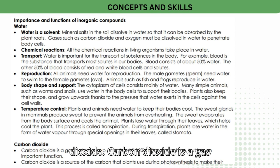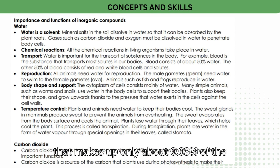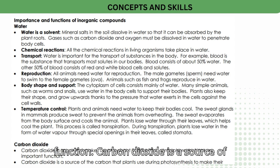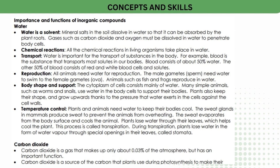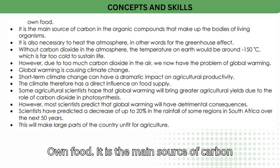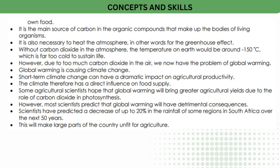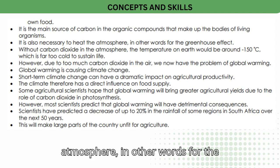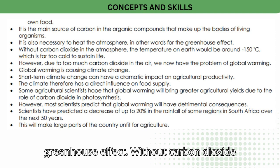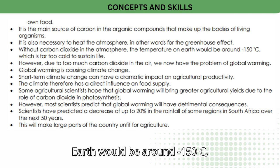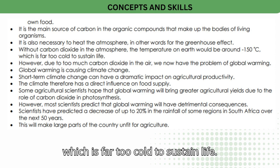Carbon dioxide is a gas that makes up only about 0.03% of the atmosphere, but has an important function. Carbon dioxide is a source of the carbon that plants use during photosynthesis to make their own food. It is the main source of carbon in the organic compounds that make up the bodies of living organisms. It is also necessary to heat the atmosphere — in other words for the greenhouse effect. Without carbon dioxide in the atmosphere, the temperature on earth would be around minus 150°C, which is far too cold to sustain life.